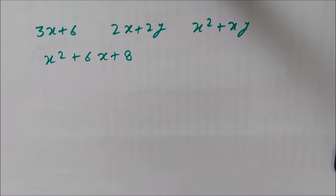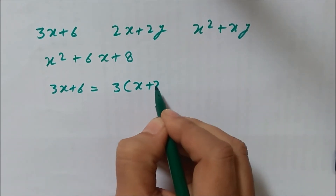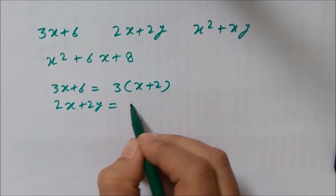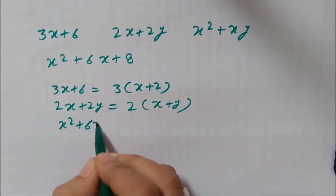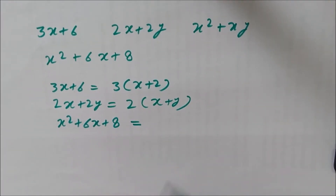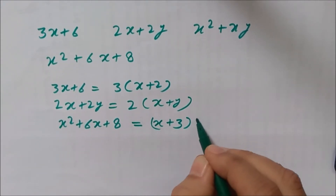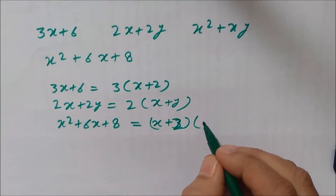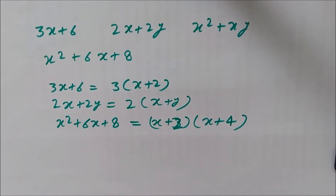After applying the method, we will be able to understand that 3x plus 6 can be expressed as 3 into x plus 2, or 2x plus 2y can be expressed as 2 into x plus y, or x squared plus 6x plus 8 can be expressed as x plus 2 into x plus 4. Now we will learn how to convert these expressions, which are not very obvious in factor form, using a systematic method of factorizing algebraic expressions.